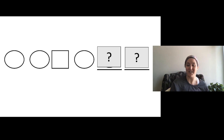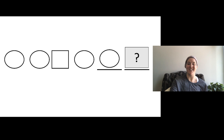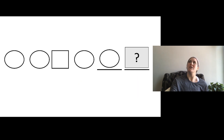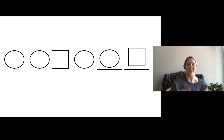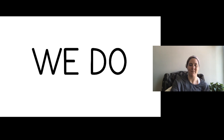Okay, I'm going to do another one. This one has circles and squares. So first I'll say the pattern to myself: circle, circle, square, circle, circle — it should be a circle. I drew a circle. Now I'll say it again: circle, circle, square, circle, circle, square — it should be another square, so I'll draw a square. Circle, circle, square, circle, circle, square. I love doing patterns!